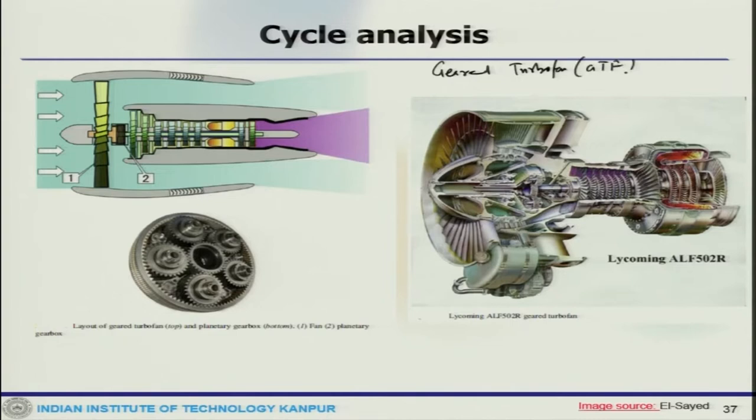This is called the gear turbofan (GTF). These are some examples, and this is how the gearbox looks like and where it is used. Here the fan is normally part of the low spool; both fan and LPT are turning at the same speed. However, often it is a compromise because the fan really operates more efficiently at low rotational speed while the rest of the low spool is more efficient at higher speed.